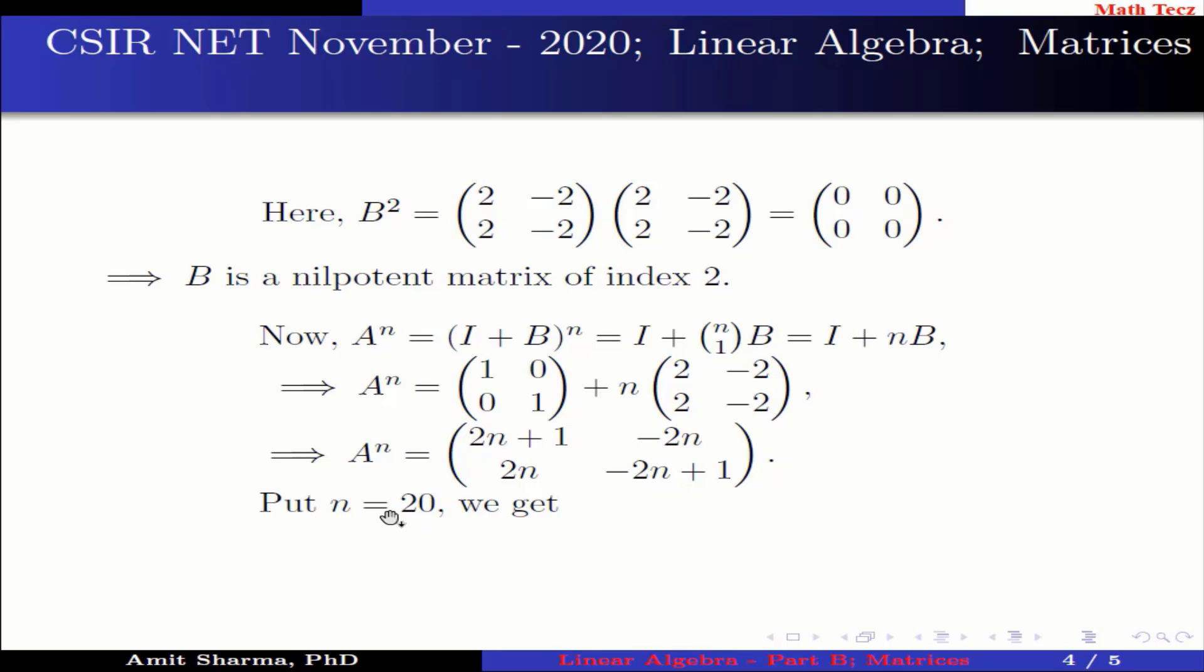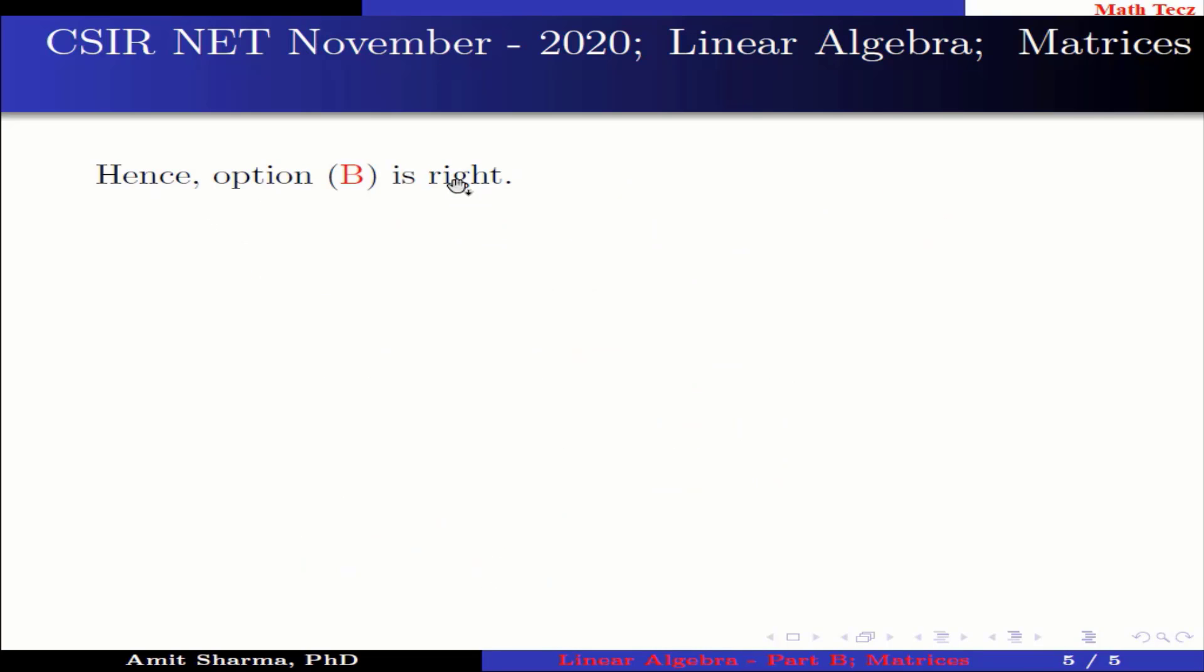Put n equal to 20, we get A raised to the power 20 is the matrix having the element 41, -40, 40, and -39. Hence option B is right.